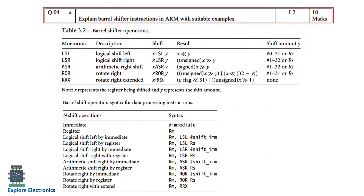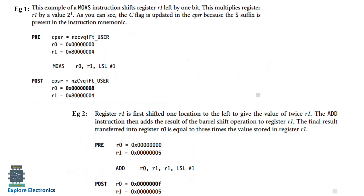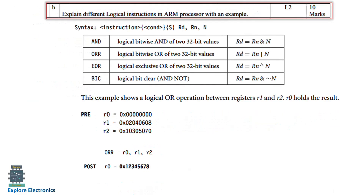The next question is: explain barrel shifter instructions. Questions on the ARM instruction set are very common in exams. The barrel shifter performs logical shift, arithmetic shift, and rotate operations. You need to explain how each operation works, the amount by which you can shift, and provide examples. Two examples are given here for reference.